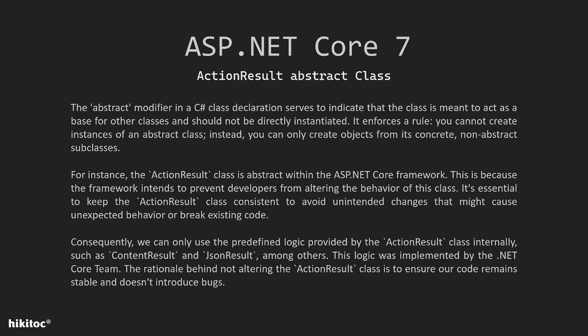I will rephrase the official documentation and provide additional explanations for better understanding. The abstract modifier in a C# class declaration serves to indicate that the class is meant to act as a base for other classes and should not be directly instantiated. It enforces a rule: you cannot create instances of an abstract class. Instead, you can only create objects from its concrete, non-abstract subclasses.